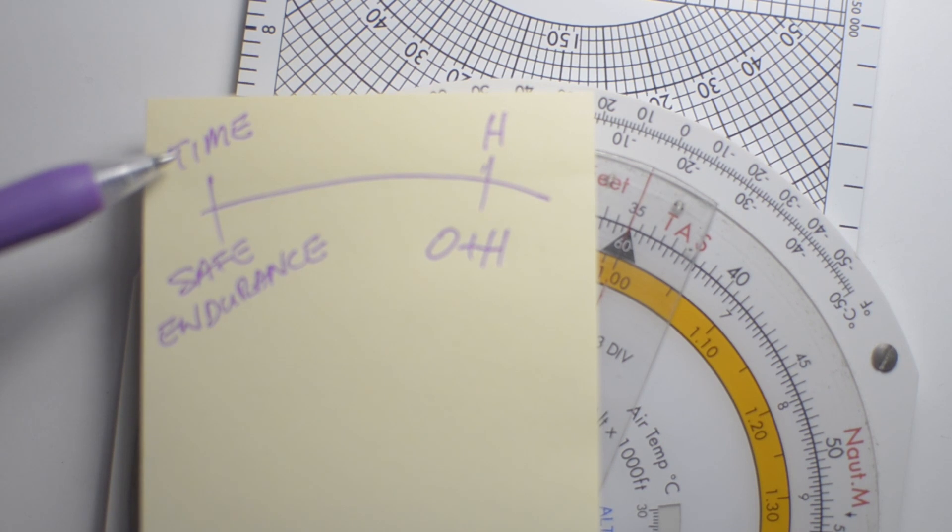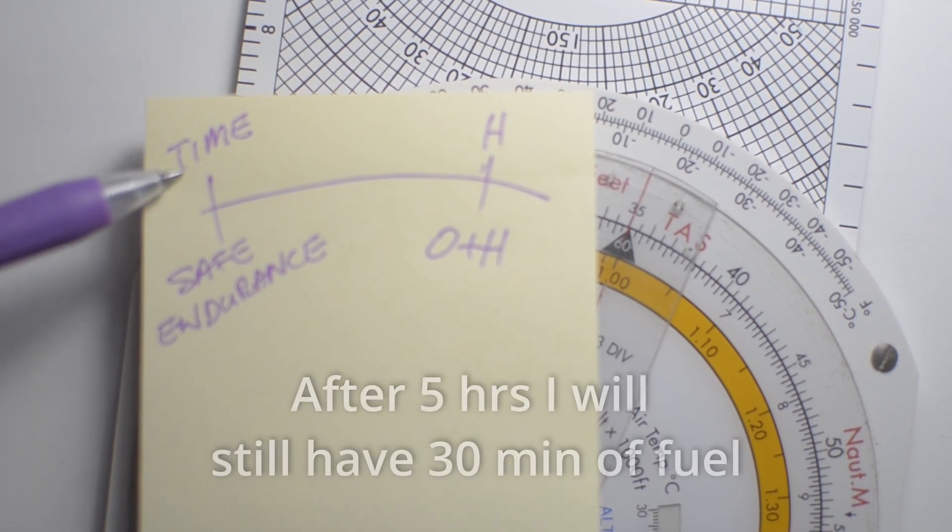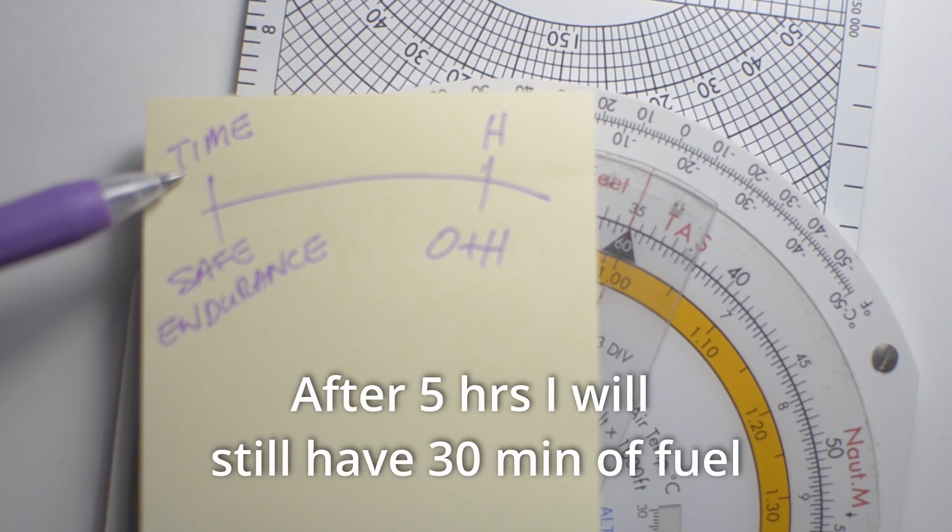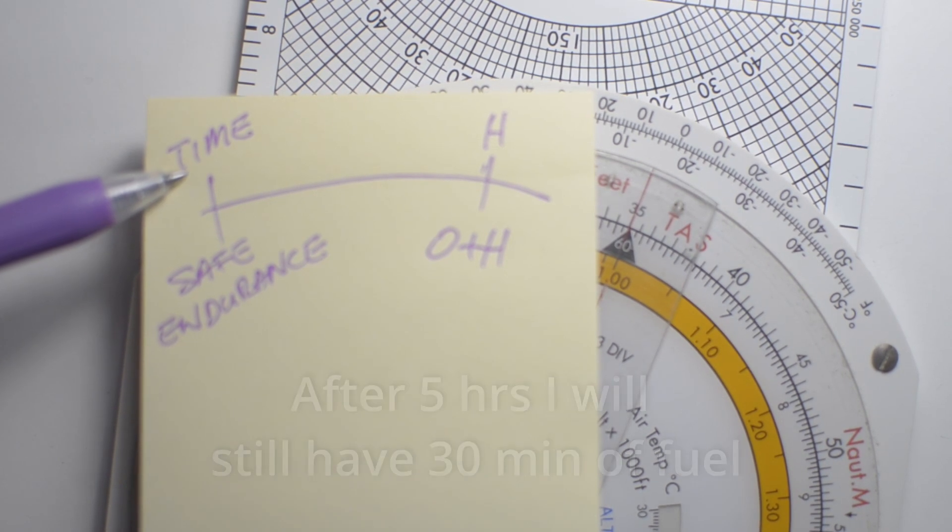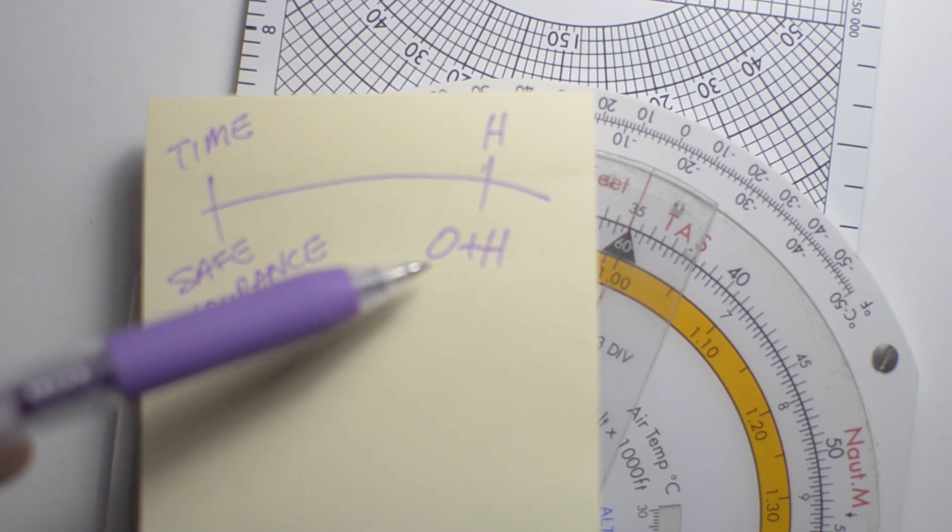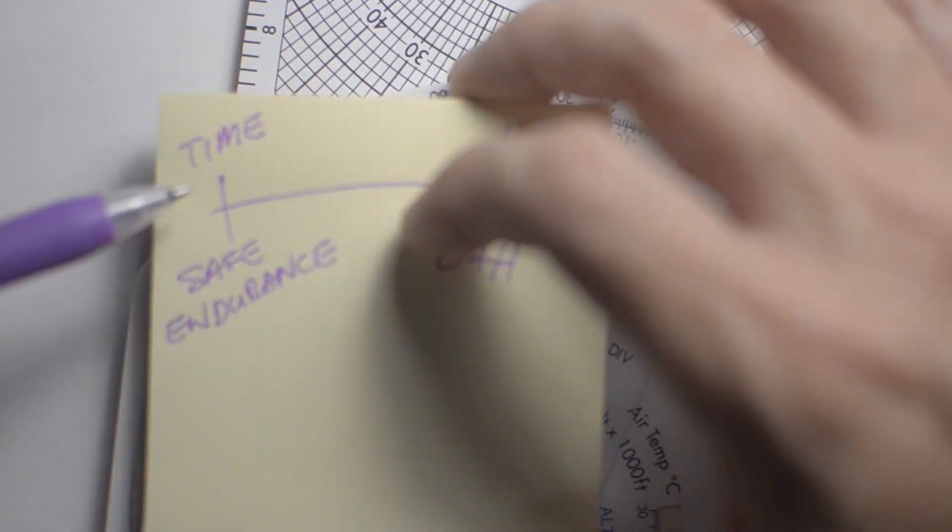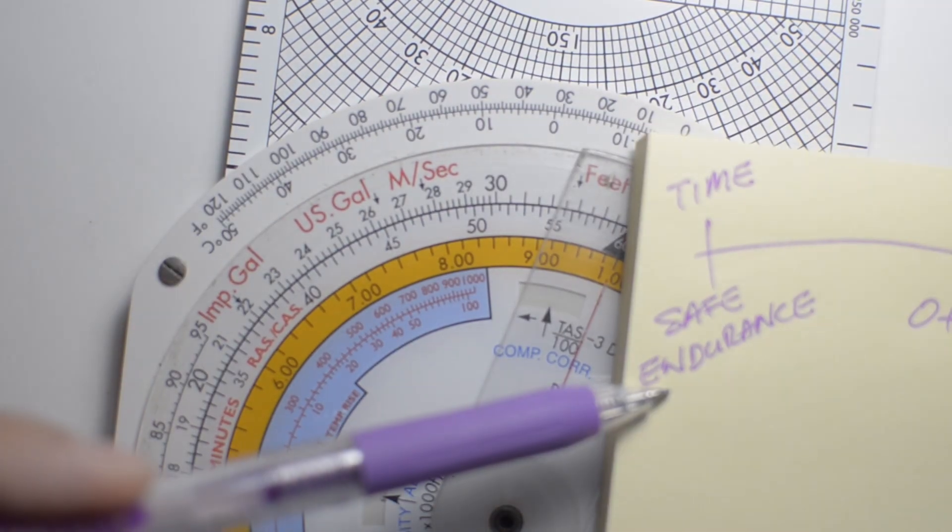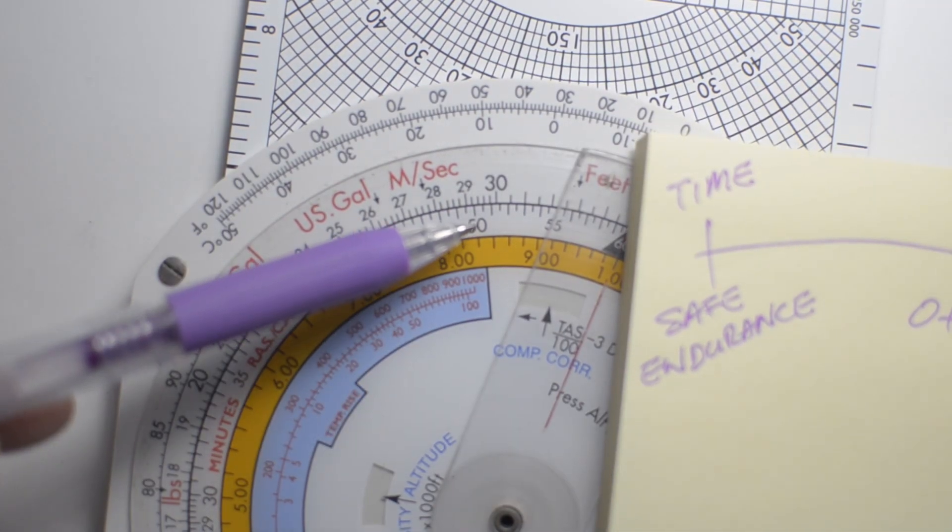And we know that safe endurance is five hours. What we don't know is where the point of safe return is, and we don't know how long it will take us to fly there using our onwards ground speed. So we're going to look for five hours, and we find five hours actually sitting here.